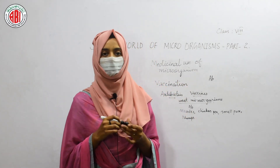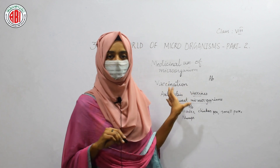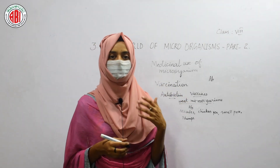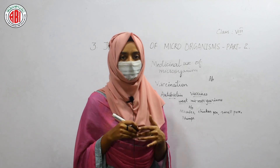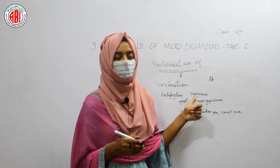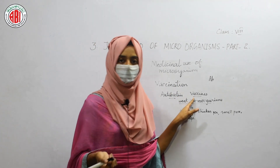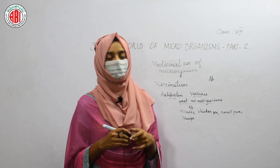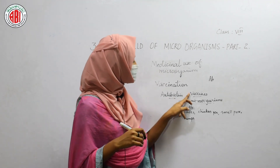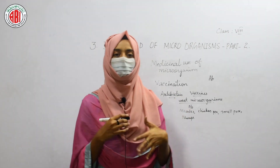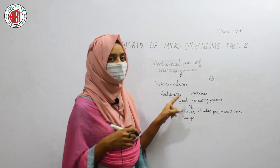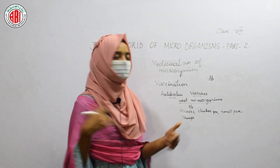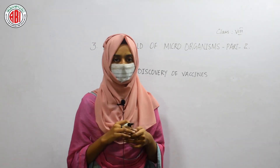Now let us talk about the difference between antibodies and vaccines. Antibodies control bacterial infections and bacterial growth. Vaccines are weak microorganisms injected into the body; after injection, antibodies are produced and used to fight these microorganisms, remaining active for longer periods of time to protect us from infection. In this way, vaccines — being weak microorganisms injected artificially — lead to the production of antibodies that protect our body from diseases like measles, chickenpox, smallpox, mumps, and many more.